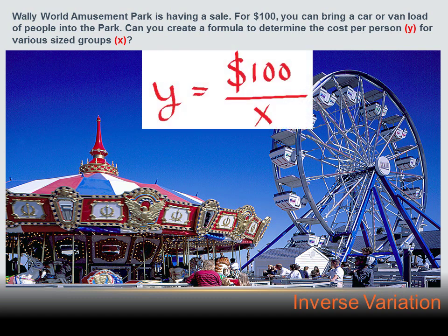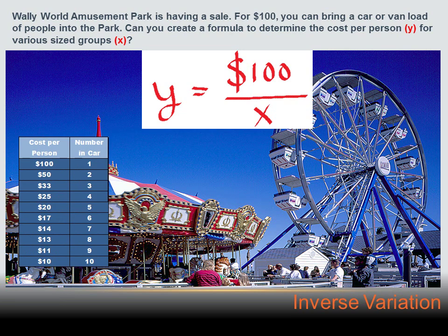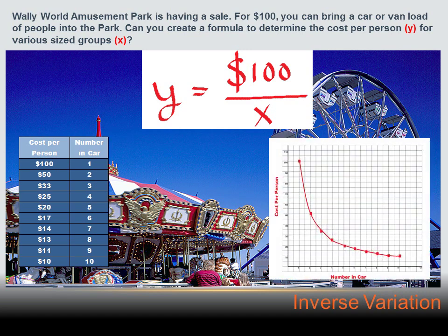We can write that as an equation: y, the cost per person, equals one hundred dollars divided by x, the number of people in the van. That's the same format as an inverse variation — y equals k divided by x, where k is one hundred. If we create a chart, as the number of people increases the cost per person goes down, and if we graph it we get a curved line.